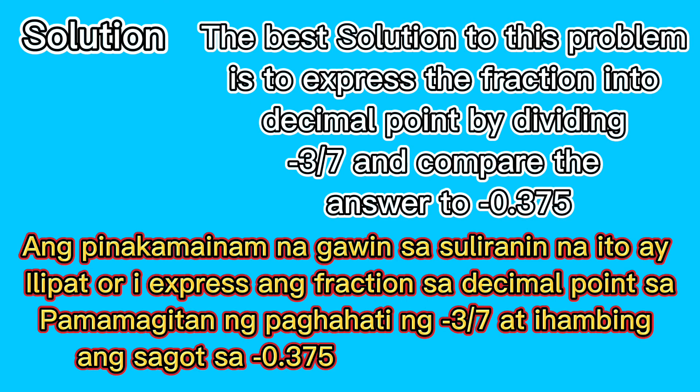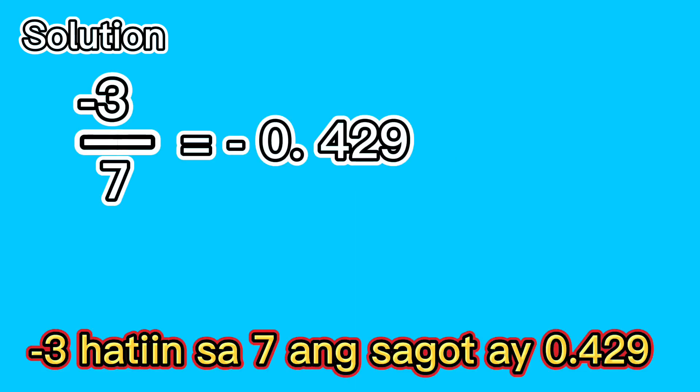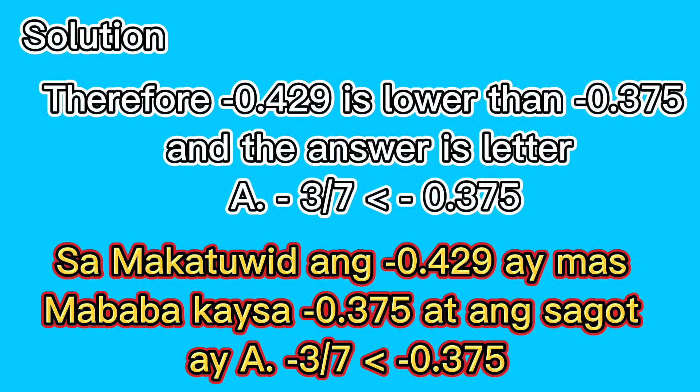The best solution to this problem is to express the fraction as a decimal by dividing negative 3 over 7 and compare the answer to negative 0.375. Negative 3 divided by 7 is equal to negative 0.429. Therefore, negative 0.429 is lower than negative 0.375, and the answer is letter A: negative 3 over 7 is less than negative 0.375.